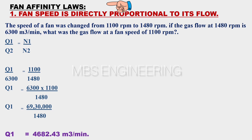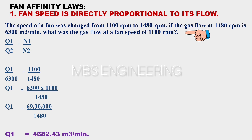Next, we learn the first affinity law and simple calculations. The first affinity law is: fan speed is directly proportional to its flow. Assume that the speed of a fan was changed from 1100 RPM to 1480 RPM. If the gas flow at 1480 RPM is 6300 cubic meters per minute, what was the gas flow at a fan speed of 1100 RPM? The fan speed N1 divided by N2 is directly proportional to its flow Q1 divided by Q2, where N1 and N2 are speeds in RPM.